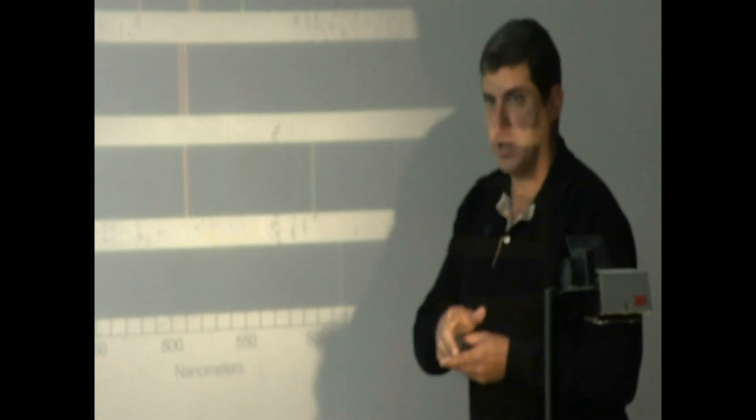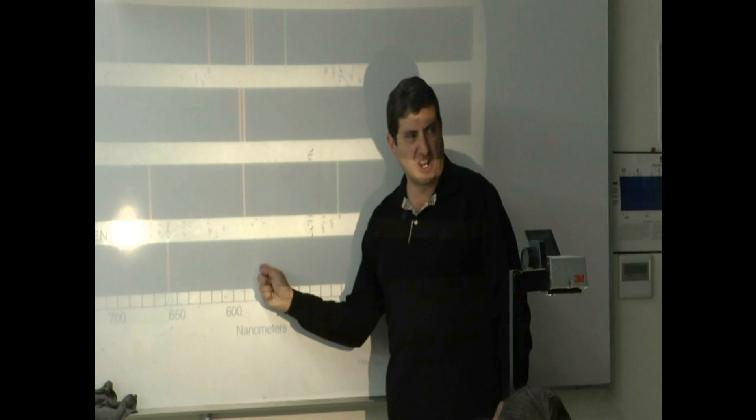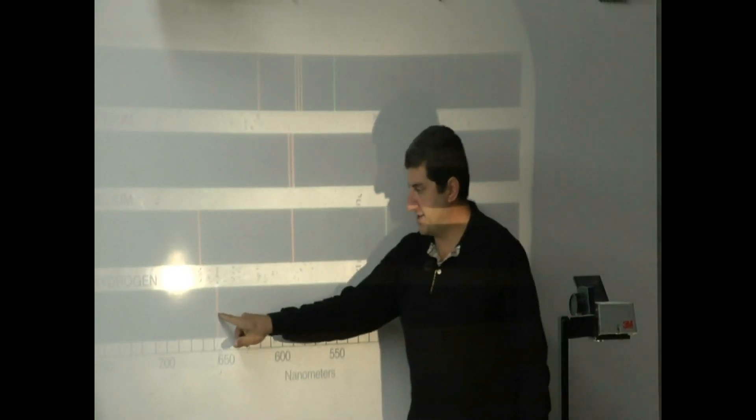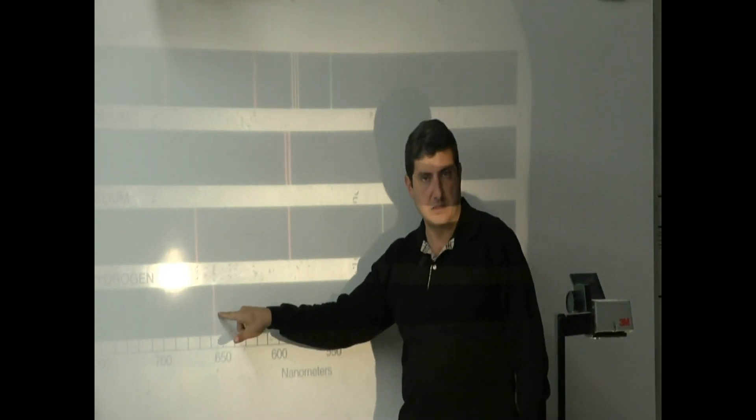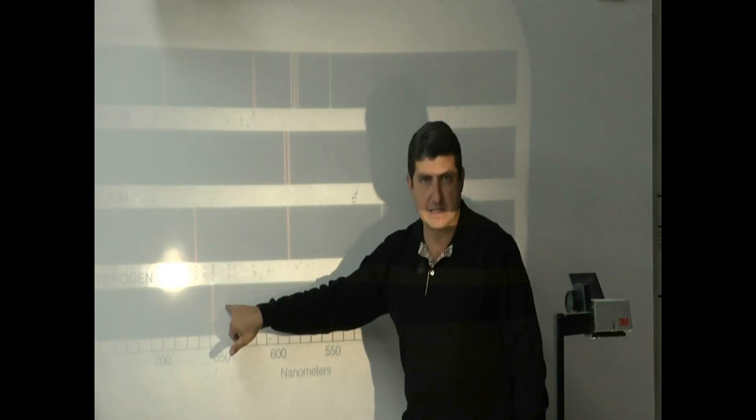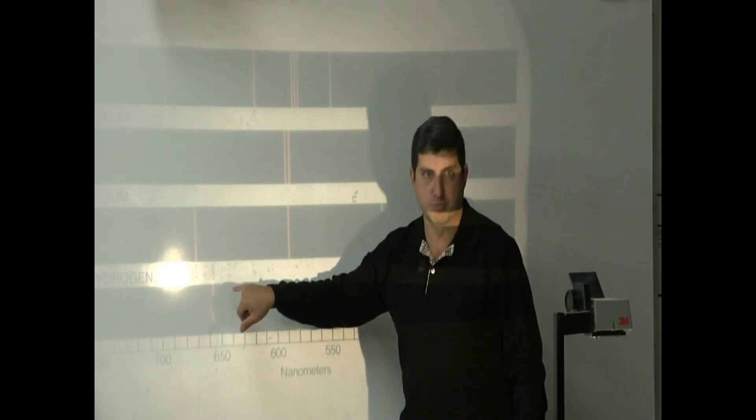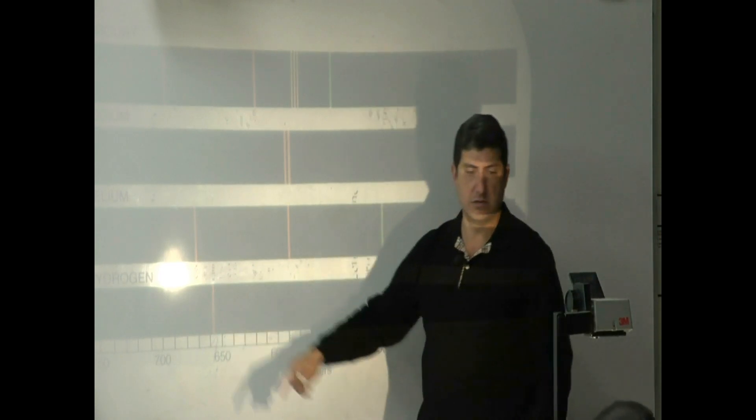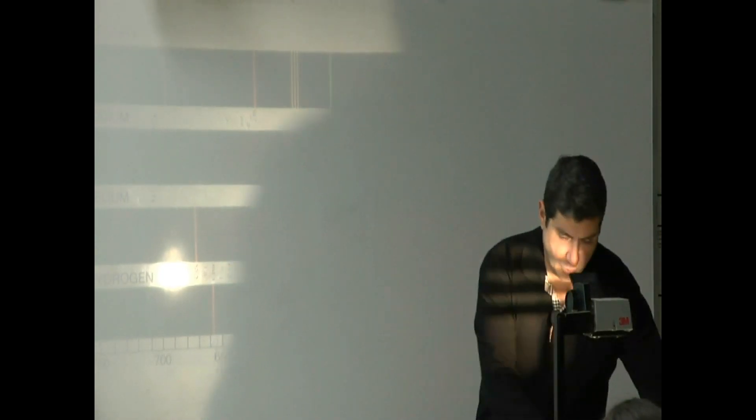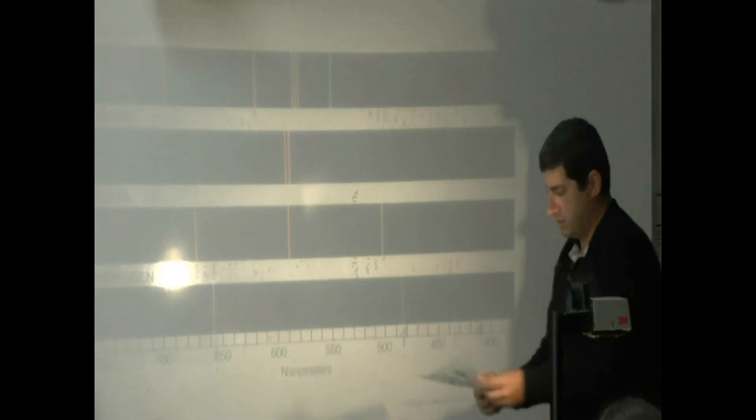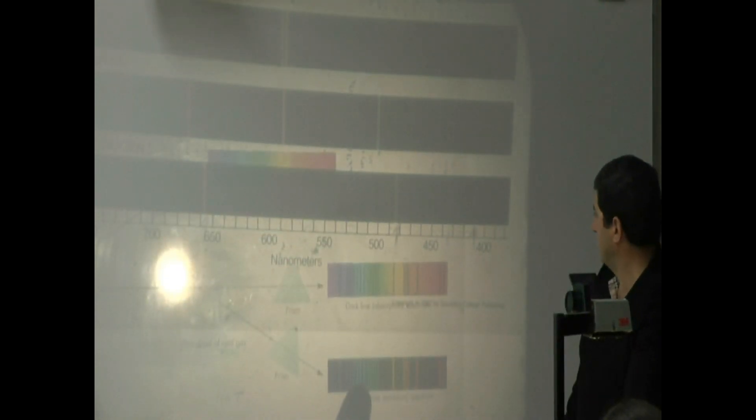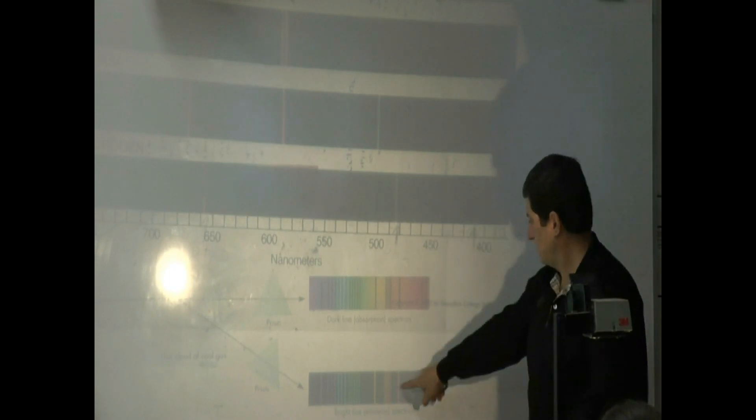What kind of spectra did I show you? Notice, the background is dark. The lines are bright. What kind of spectra? Bright line spectra. Bright line. The lines are bright. So the one that I'm showing you here is this one. You see here? This one is the same as this one.